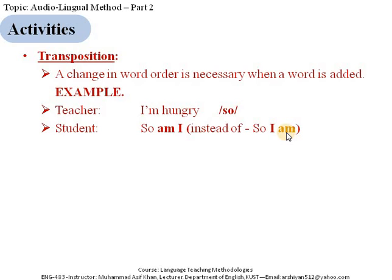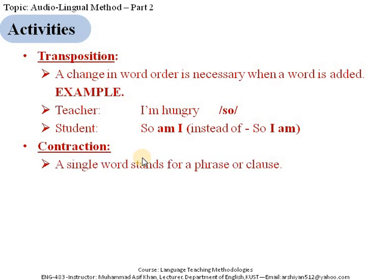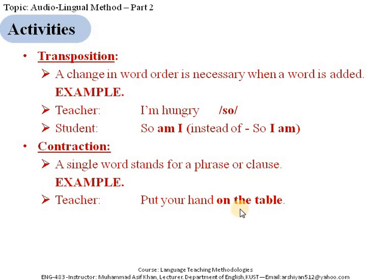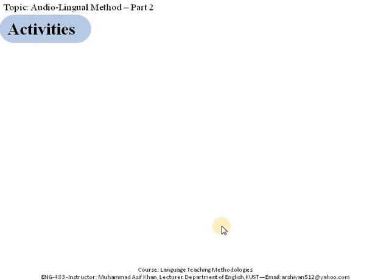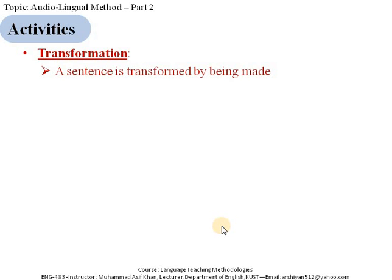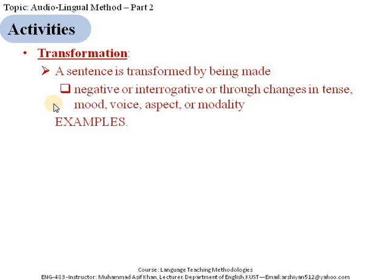Another activity is contraction, where a single word stands for a phrase or clause. For example, from 'Put your hand on the table,' instead of the phrase 'on the table' the student uses a single word: 'Put your hand there.' Another activity is transformation, where a sentence is transformed by being made negative or interrogative, or through changes in tense, mood, voice, or other modalities.